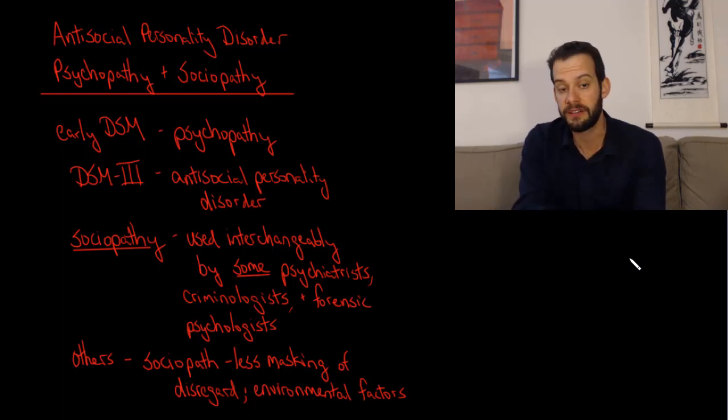Part of this confusion stems from the fact that the early editions of the DSM actually used the term psychopathy. And it wasn't until the DSM-III that the term antisocial personality disorder was introduced. And so that can be the cause of some of the confusion that early use of the terms weren't necessarily distinguished, or if somebody looks back at earlier editions, they might not know that there was a change in the term that the DSM uses.